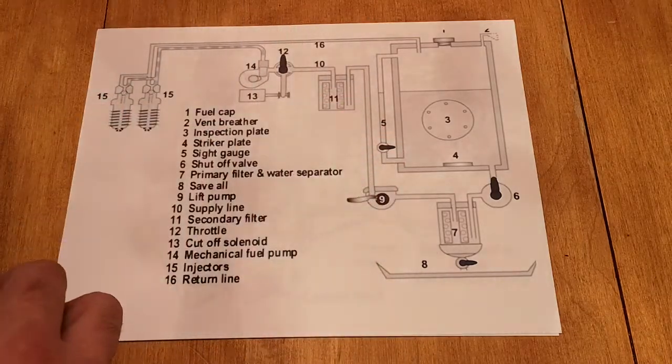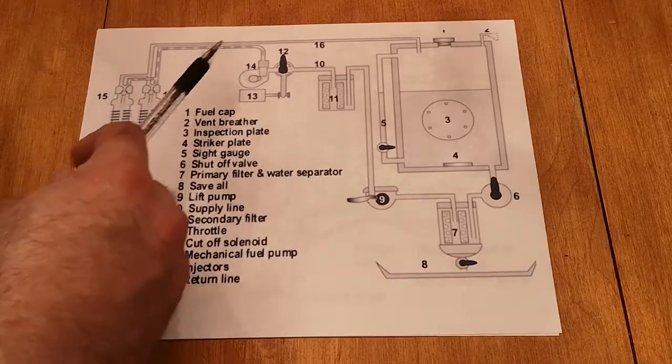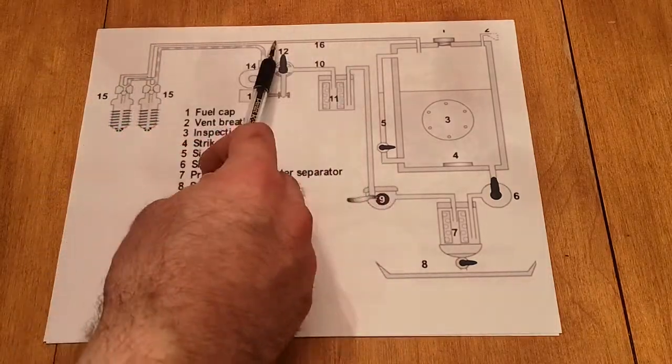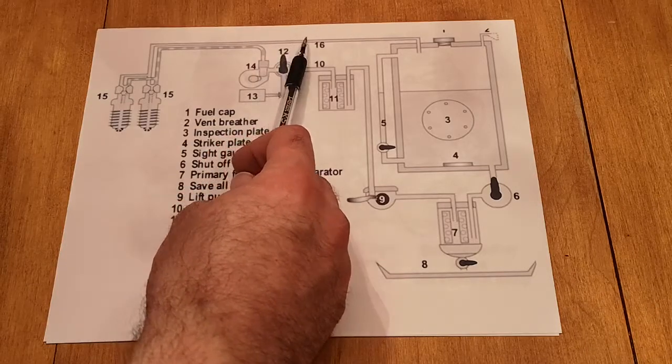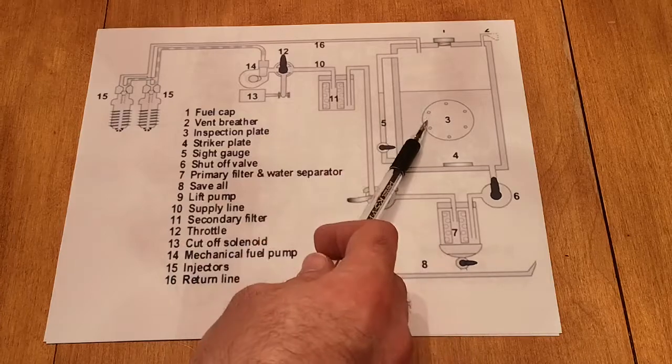But as it goes back to tank, it doesn't travel that fast. There's a restriction that it has to pass through, and that will reduce the pressure to approximately 3 psi, where it returns to tank.